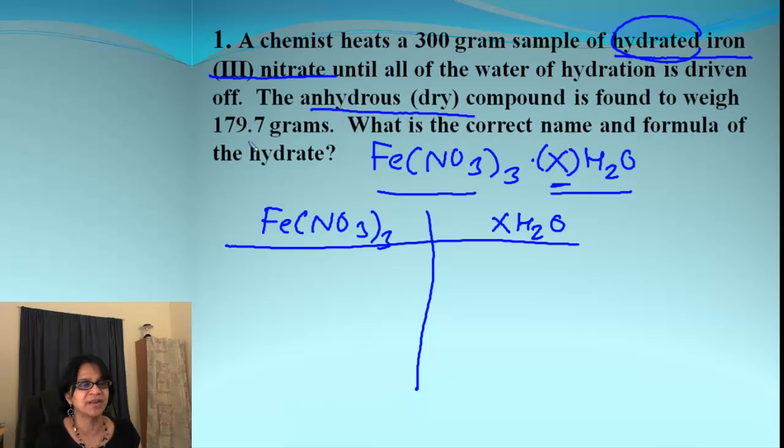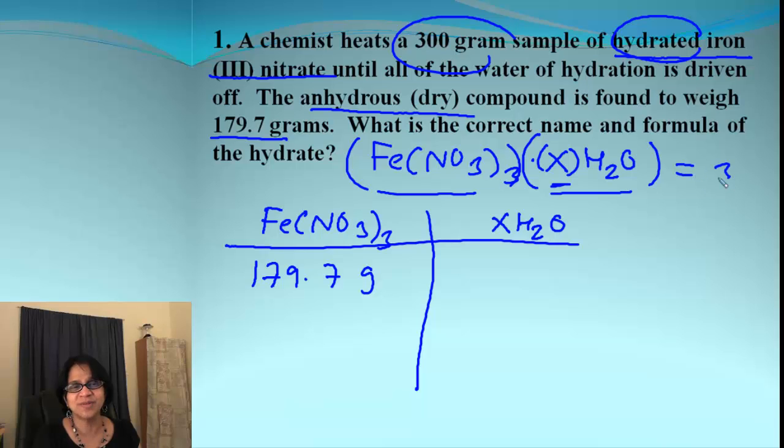So we are going to begin with the mass of each. Clearly it says the anhydrous compound is 179.7. So let's write that down and then how do you get the mass of water molecules? The total mass was 300 grams. So the water molecules mass must be 300 grams minus the mass for anhydrous and that is 120.3 grams.